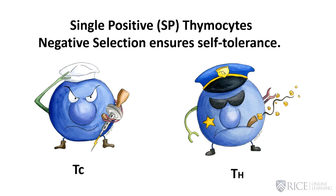How are we going to make sure these cells don't get out of the thymus? This is another way of saying that we're going to establish central tolerance, as we did with the B cells. We're going to make sure that they don't recognize self-antigen. We can make an enormous number of different TCRs capable of recognizing almost anything, so there's a real danger here that we want to avert.